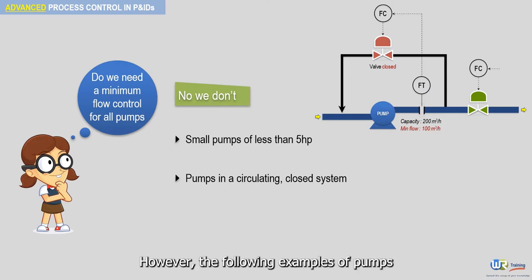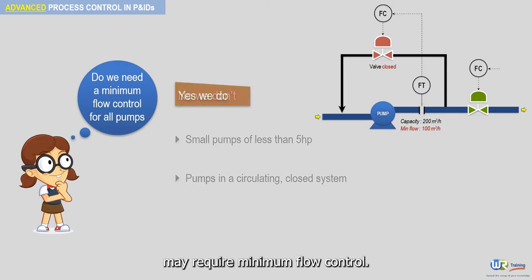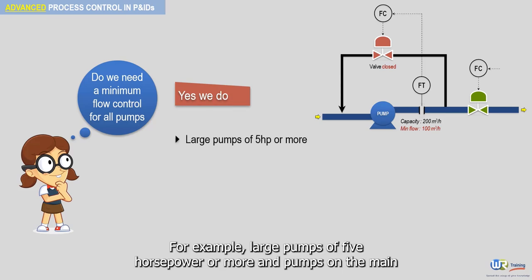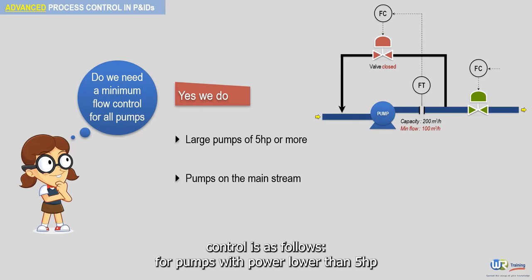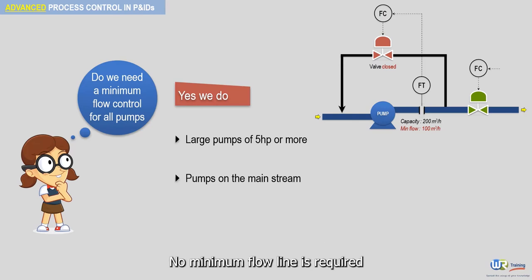The following examples of pumps may require minimum flow control: large pumps of 5 horsepower or more and pumps on the mainstream. The rule of thumb for providing minimum flow control is as follows: for pumps with power lower than 5 horsepower, no minimum flow line is required.